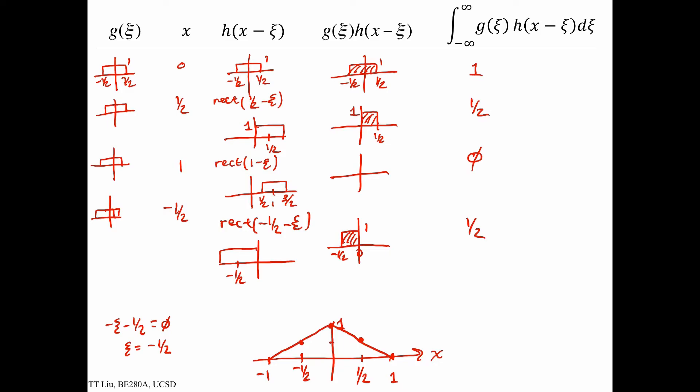This is a function used enough that we give it a special name: it's called the triangle function. The triangle function is equal to rect of x convolved with rect of x. What we've done here is applied the definition, flipping and shifting the function, and computing the area of overlap at each shift. That area of overlap is the value of the convolution for every value of x.